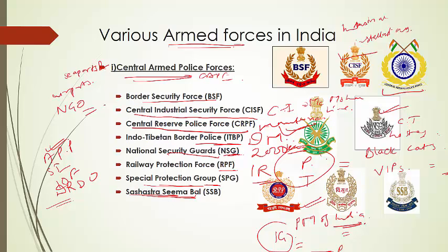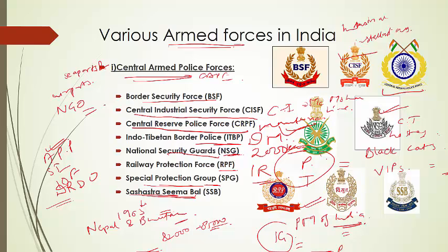Next is the Sashastra Seema Bal — SSB — formed in 1963 as a central armed police force deployed on the borders along Nepal and Bhutan. It safeguards the border between India-Nepal and India-Bhutan. It is a relatively small central armed police force with around 82,000 to 85,000 personnel, and as they work on mountainous terrains, they must also be trained in mountaineering and search activities.